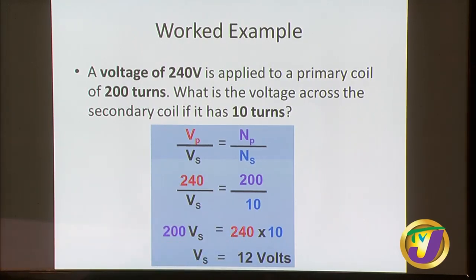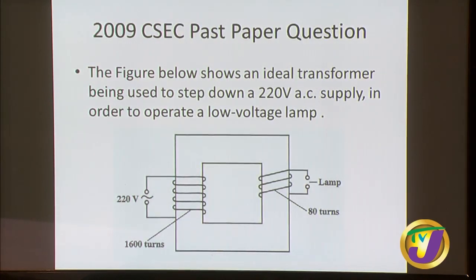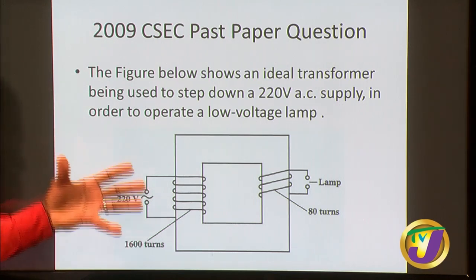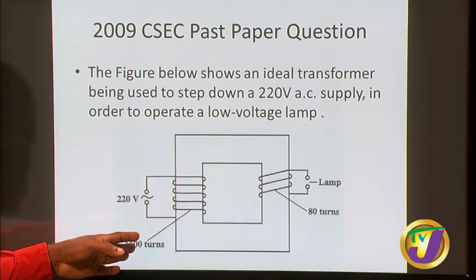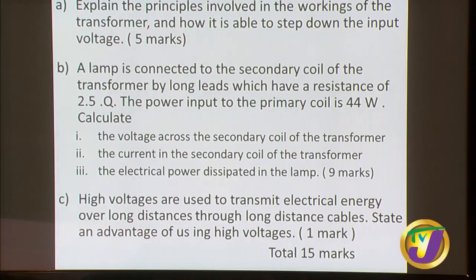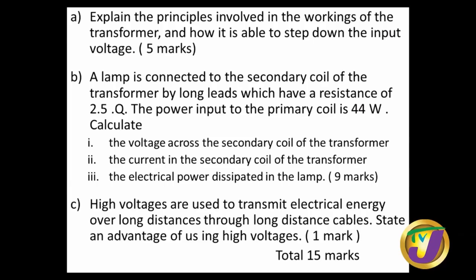Here we have a question from a CSEC past paper, around 2009. A figure shows an ideal transformer being used to step down a 220 V AC supply to operate a low voltage lamp. A household can run off either 110 or 220 V. This transformer wants to step it down to power a lamp — 220 is too much. It has 1600 turns on the primary and 80 turns on the secondary.